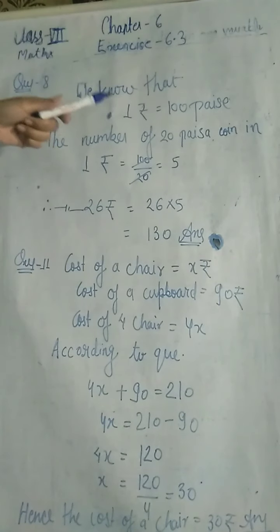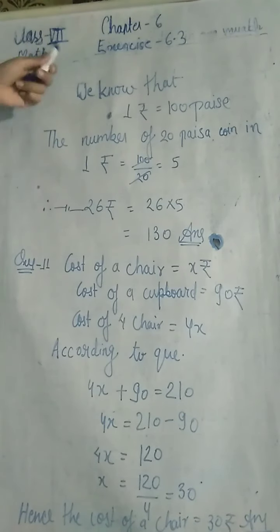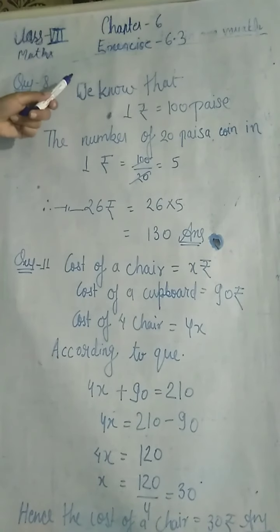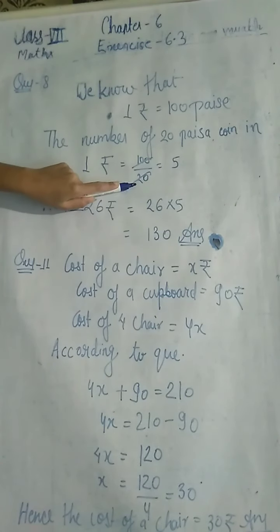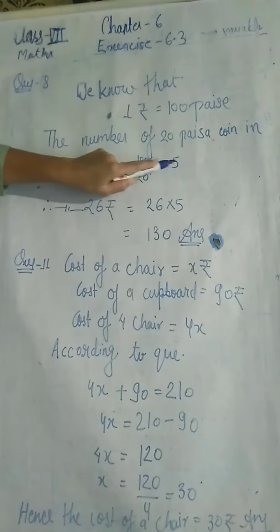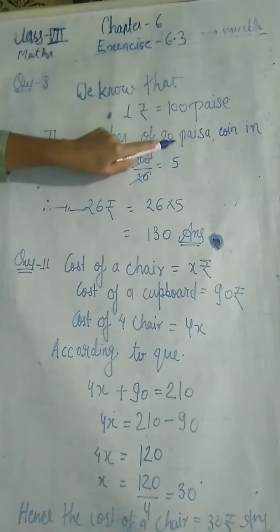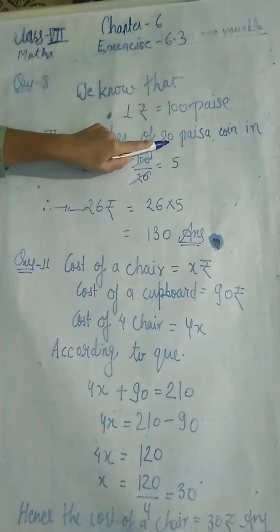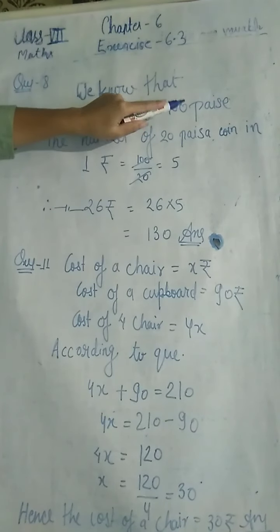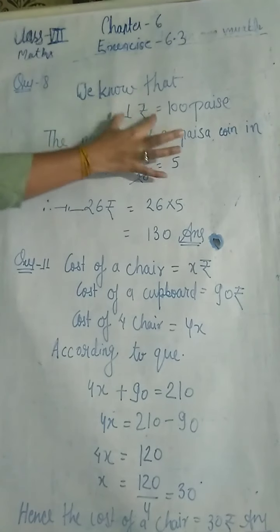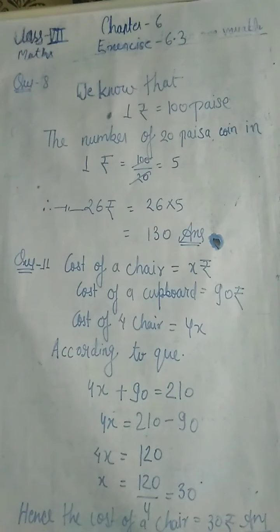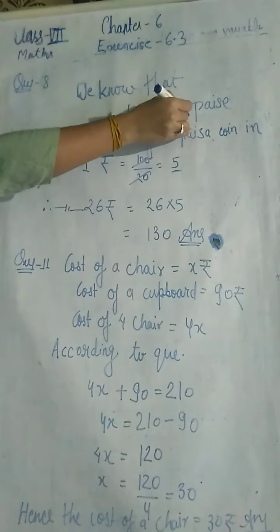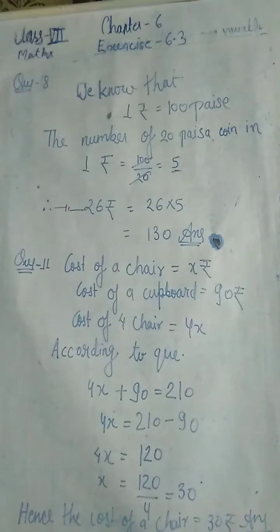The number of 20 paise coins in 1 rupee — kya karenge? Divide karenge. 100 mein 20 ka divide karenge — 20 paise ki baat ho rahi hai. Number of coins kitne aa gaye? 100 paise mein 5 coins hain 20 paise ke. Yeh number of coins hai aur yeh value hai — difference samajh mein aaya?